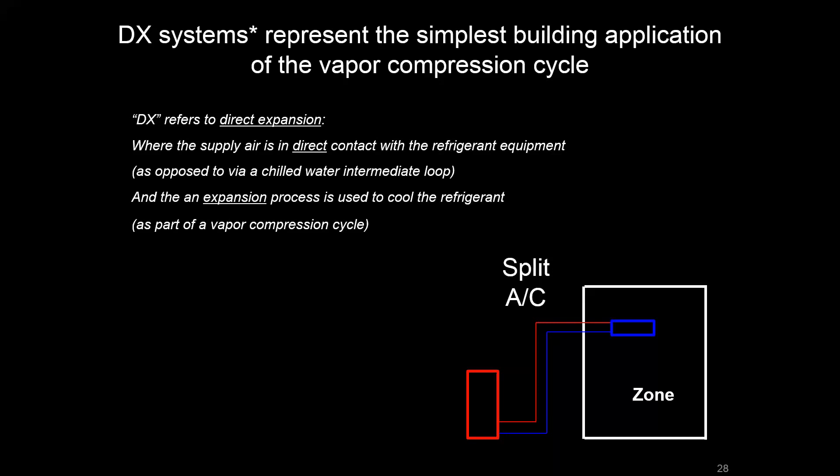The supplier is in direct contact with the refrigerant equipment as opposed to something like a chiller that has chill water in between those two loops. And the direct expansion refers to the fact that it's a vapor compression cycle which, as we'll see, uses an expansion process to cool the refrigerant.